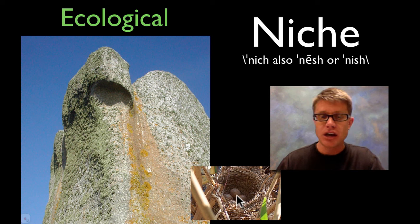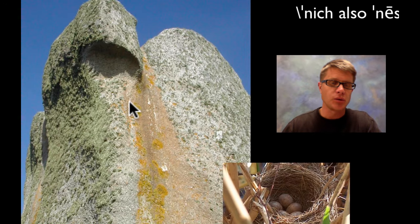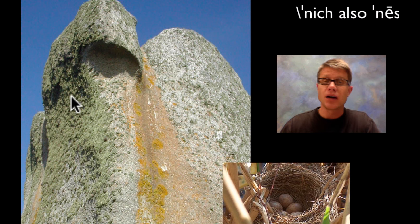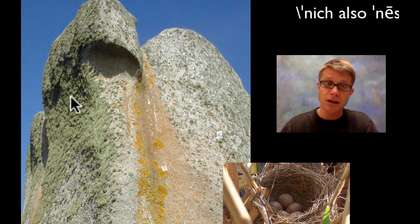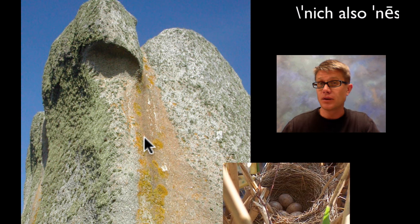A good way to think about a niche is basically your role in an environment. Looking at this image, we can see a couple of niches being exploited — there's a rock, and lichen growing on the rock. I can actually see four species here, because lichen is a symbiotic relationship between an algae and a fungus. There's green lichen and orange lichen, each exploiting a different niche, or a different job.